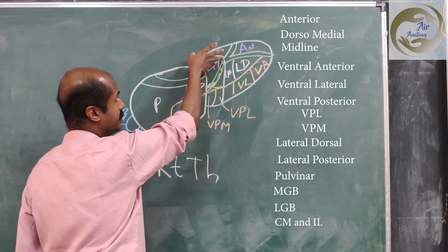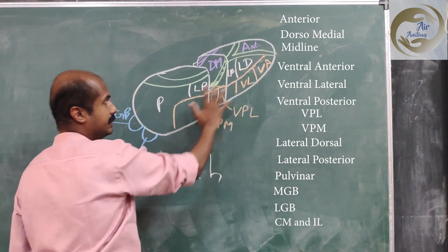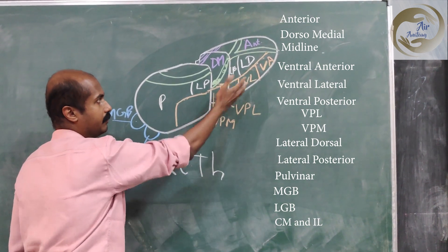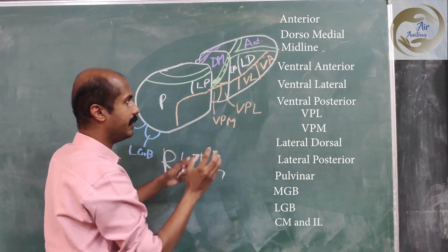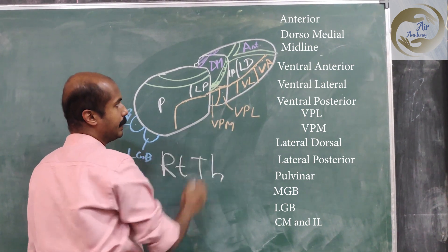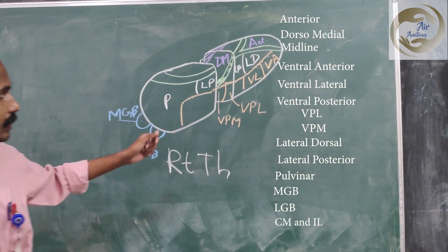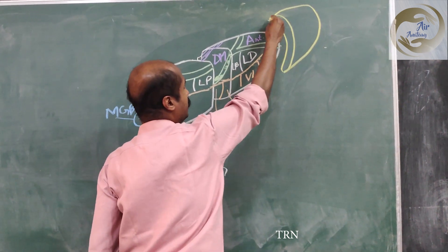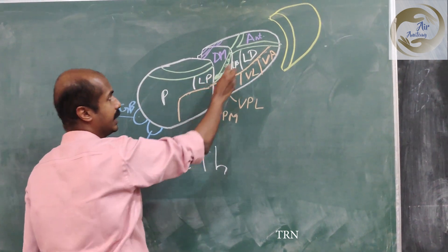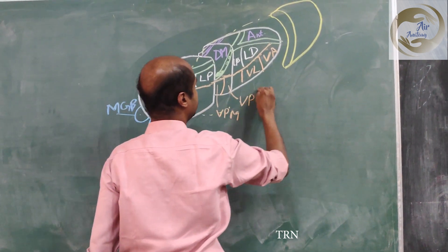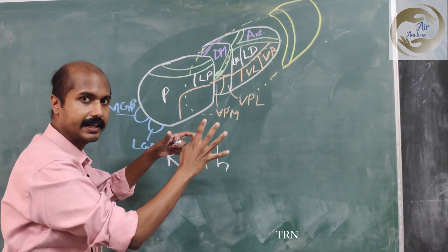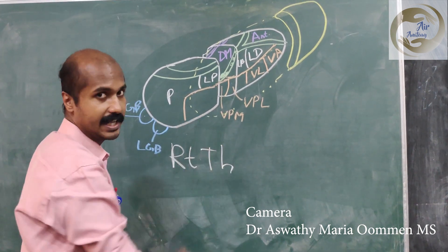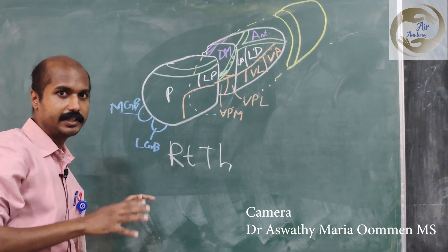To summarize, the thalamic nuclear groups are: the medial group with dorsomedial and midline nuclei; the anterior nucleus; the lateral group split into dorsal tier — LD, LP, and pulvinar — with medial and lateral geniculate bodies, and a ventral tier — VA, VL, and VP subdivided into VPL and VPM. All these nuclei are covered on the lateral side by the thalamic reticular nucleus, which acts like a shield. You would need to remove it to visualize the lateral aspect of the thalamic nuclei.